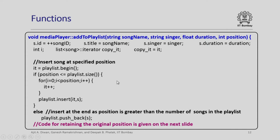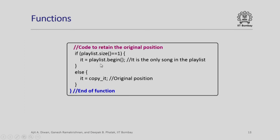The open player is the initialization function which merely sets the iterator at the beginning position of the playlist. Next comes the addition to the playlist — here we have the song name, singer, duration, position as parameters; all of these are assigned to various components of s. I increment the song ID which is the static integer. Then I insert title, singer, duration, etc. I set the iterator to playlist dot begin, and if the position given is less than or equal to playlist dot size I will insert at that position; otherwise I will insert at the end. To retain the original position, if playlist dot size is one then IT is set at the beginning; otherwise we use copy IT to restore it to the original position.